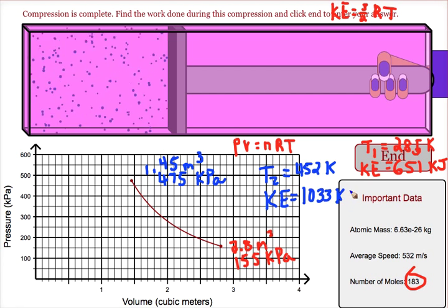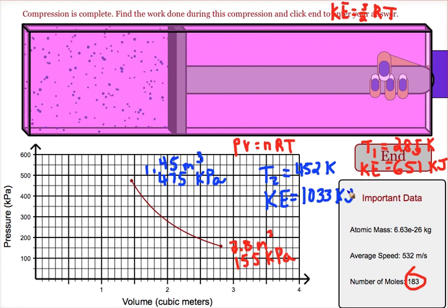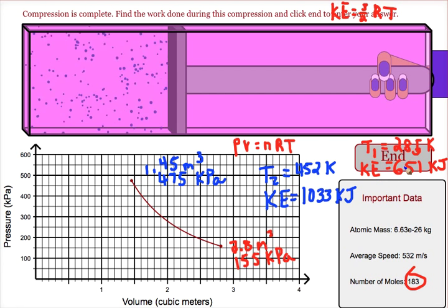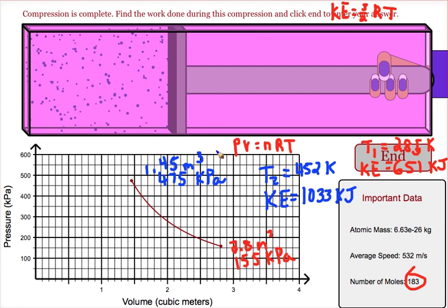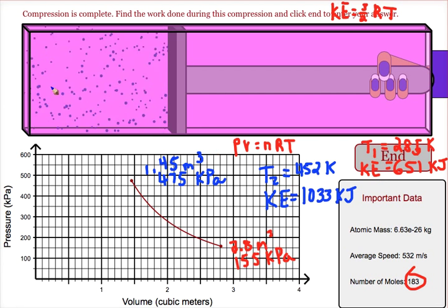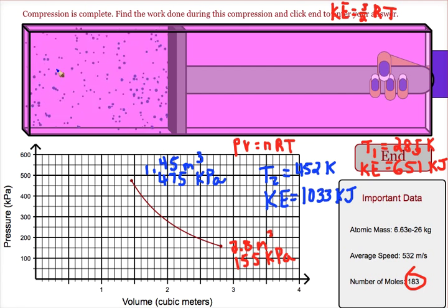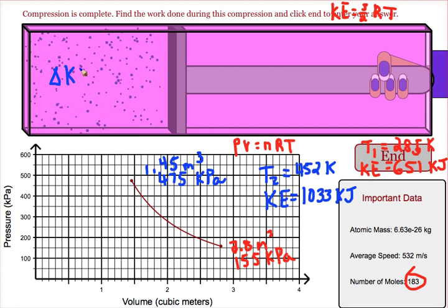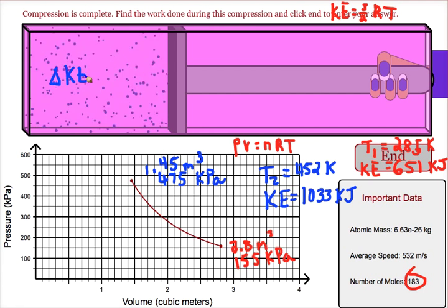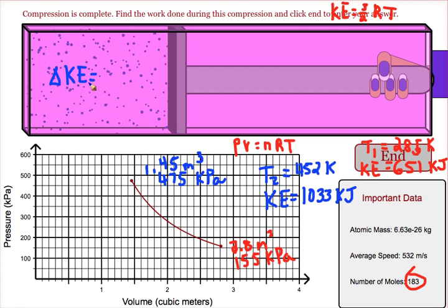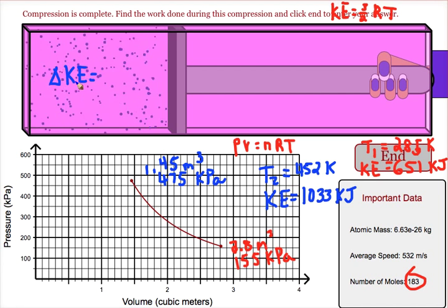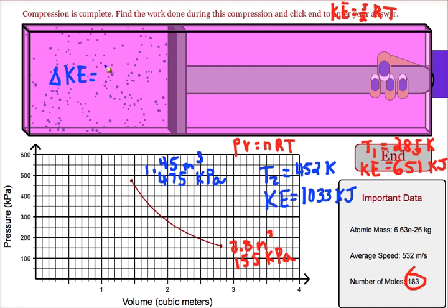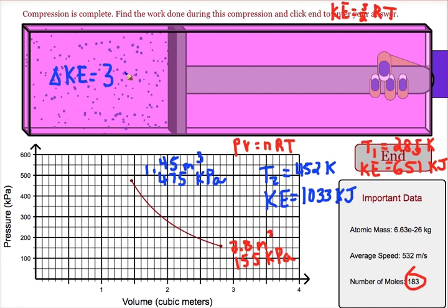I would not want to put this into megajoules because I want to subtract, and since I already had kilojoules, it would make most sense to keep both of them in kilojoules. I get a change in kinetic energy for these particles equal to 382 kilojoules.